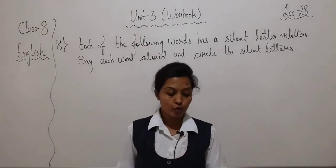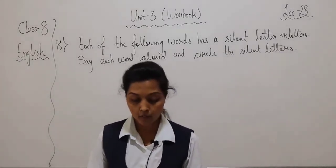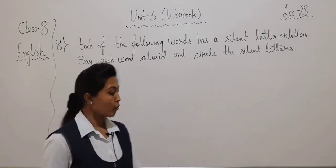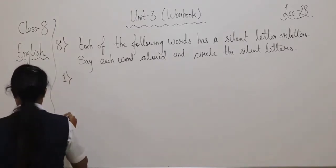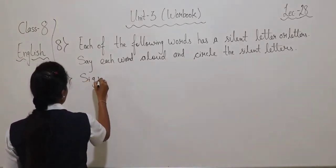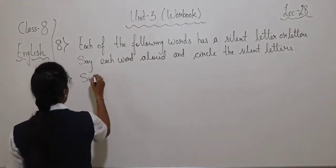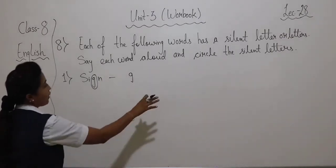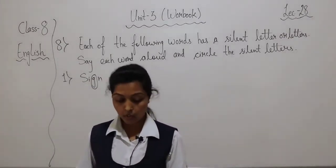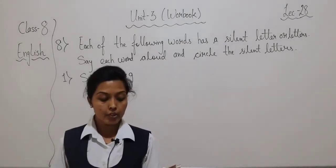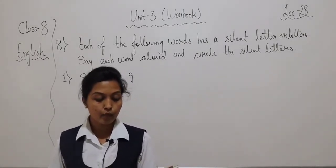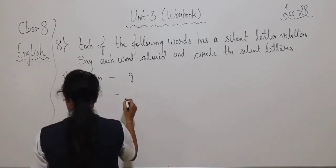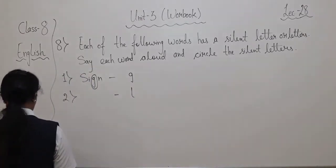One by one, just note it down and circle. I am reading, I am not going to write down each and every word. First, the way you have to note it down: it is given sign, and the circle word here — write down G. In this way, write down the rest of the word. Sign G is silent. Then number 2 — walk — L is silent.